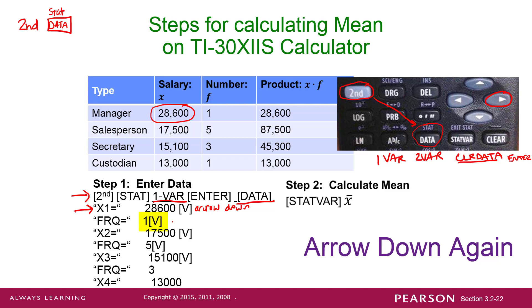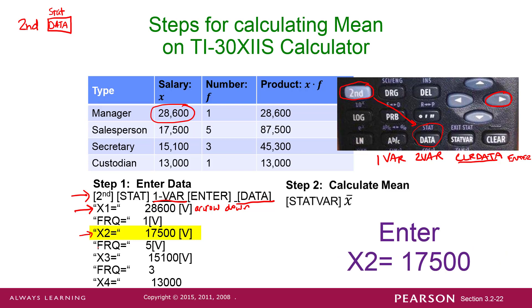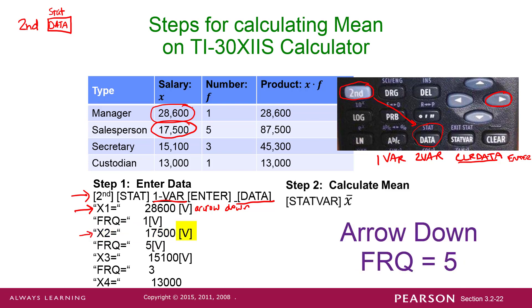It's going to ask you for data value 2. The second data value in our frequency distribution is 17,500. Enter 17,500, then arrow down again. What you should see is 'Frequency equals 1' again, but we don't want a frequency of 1 — we want a frequency of 5. So just type 5 and it will replace the 1.